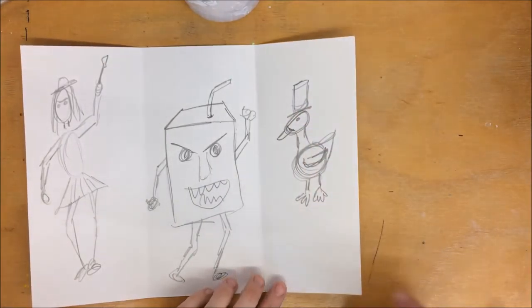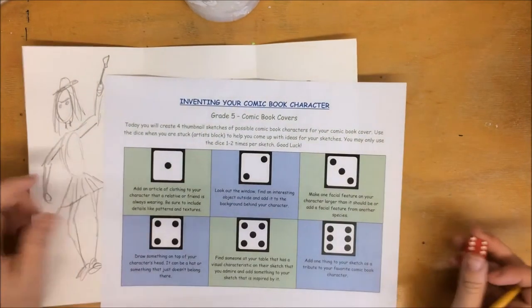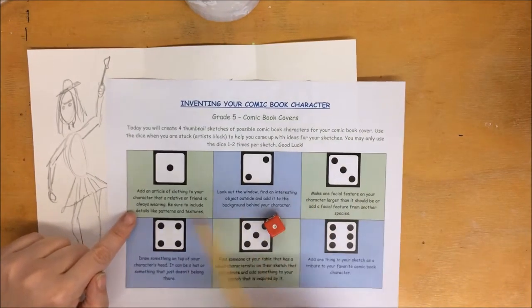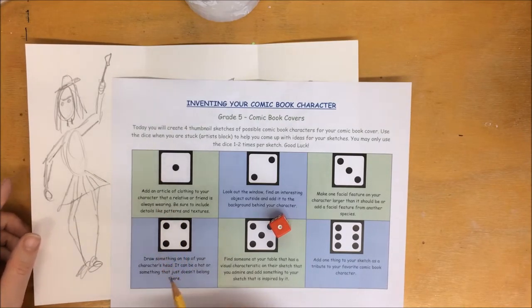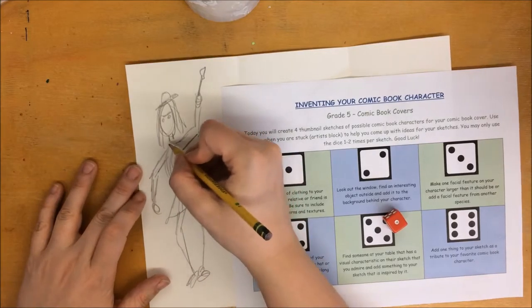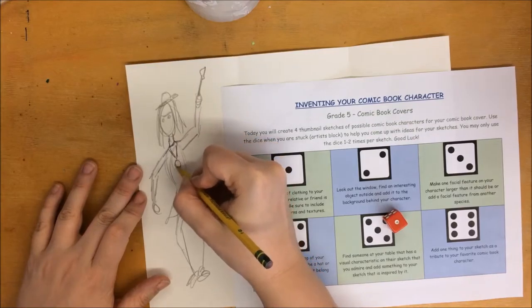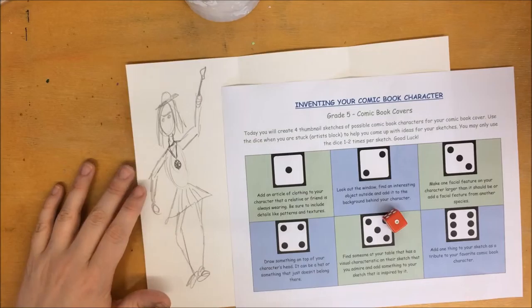Now if you get stuck and you can't think of an idea, there's a couple different things that you can do. You can use this little sheet on your table and a dice. Roll the dice. For example, I just got a one: add an article of clothing to your character that a relative or friend is always wearing. So I have a friend who always wears crazy necklaces, so maybe I will add that to this little character here. It's just something to help you kind of move along through the drawing.